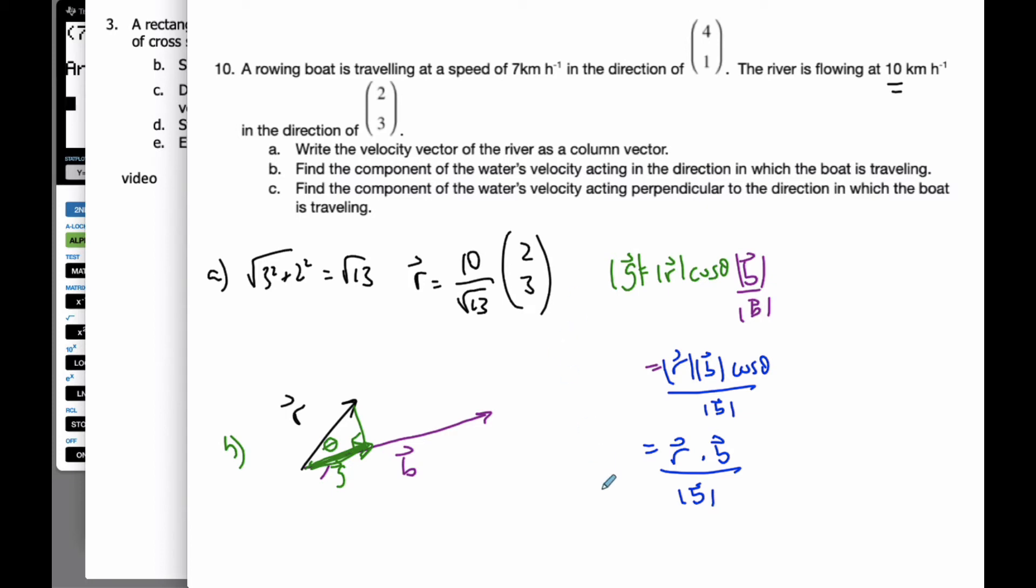And if I work with this, I know that R is 10 over square root of 13 times (2, 3), times B vector. I don't actually know yet because I know this is the magnitude and this is the direction. So I need to find the actual velocity vector of the boat. And so if I get the magnitude of this vector here, that's going to be 4 squared plus 1 squared, which is the square root of 17.